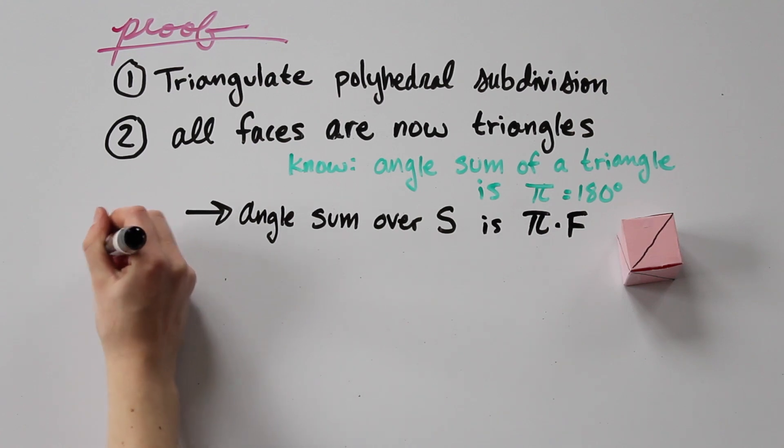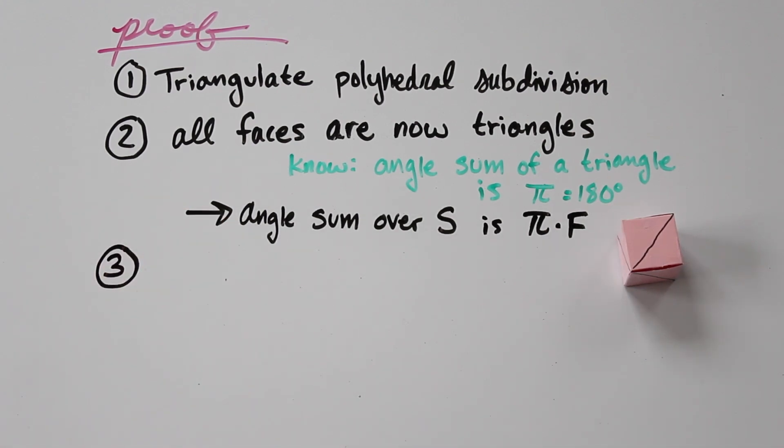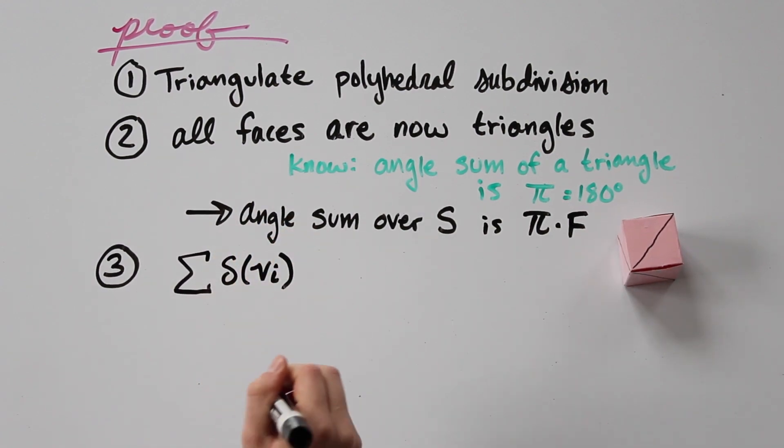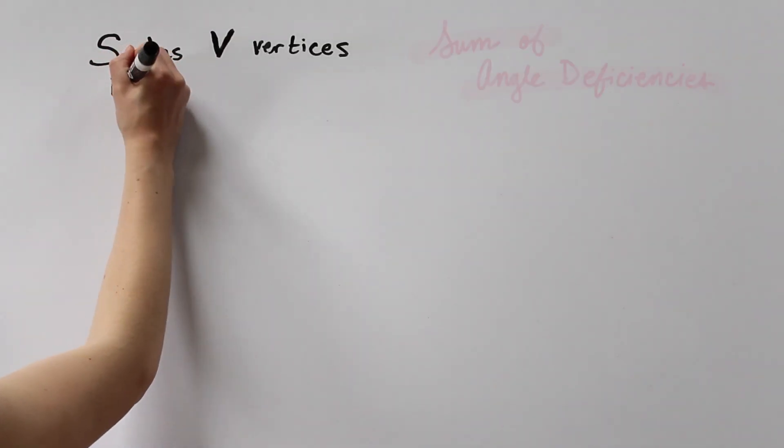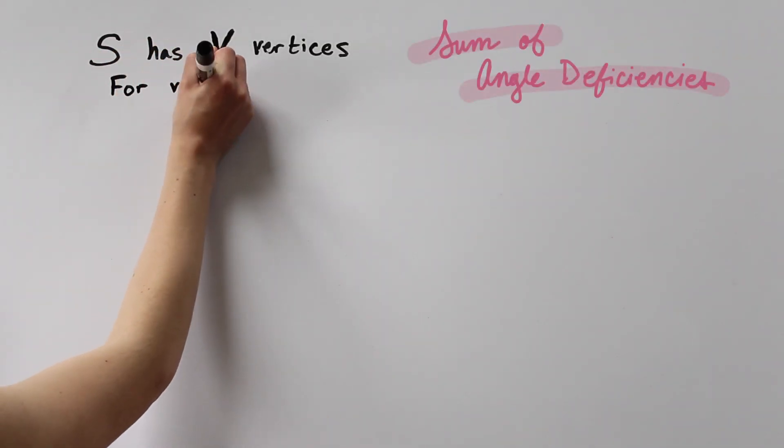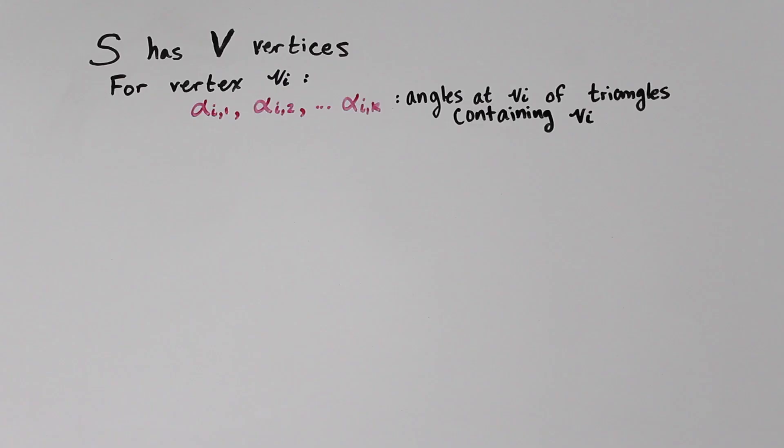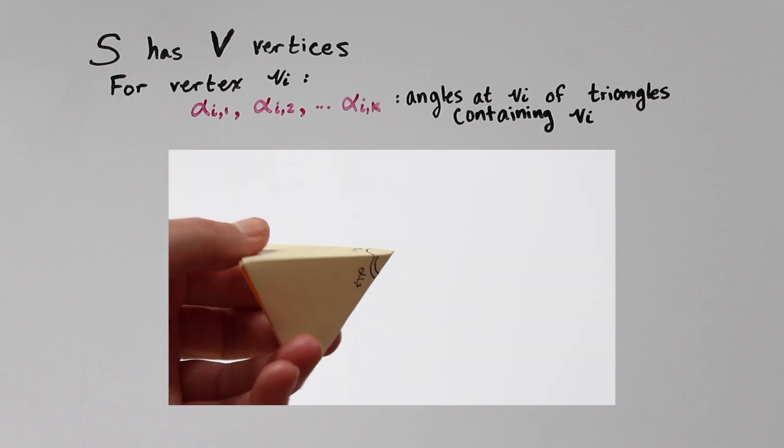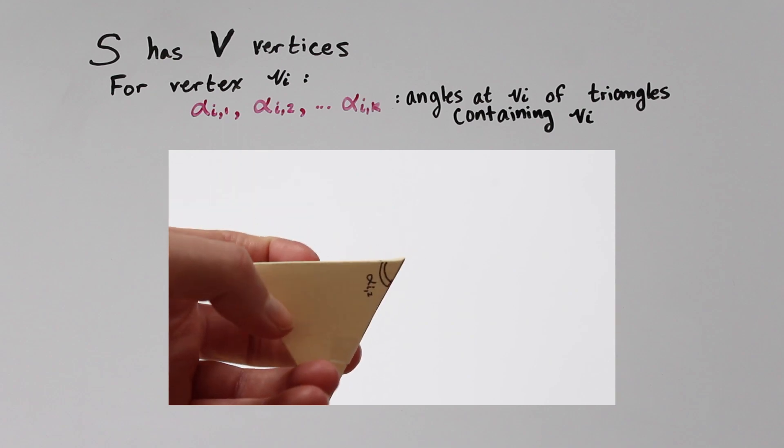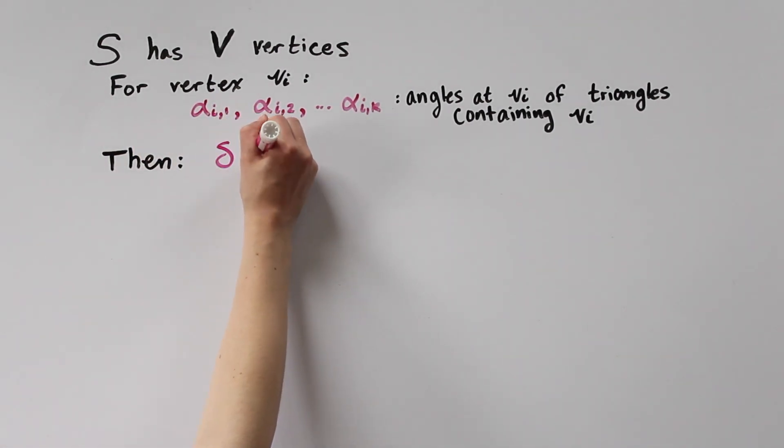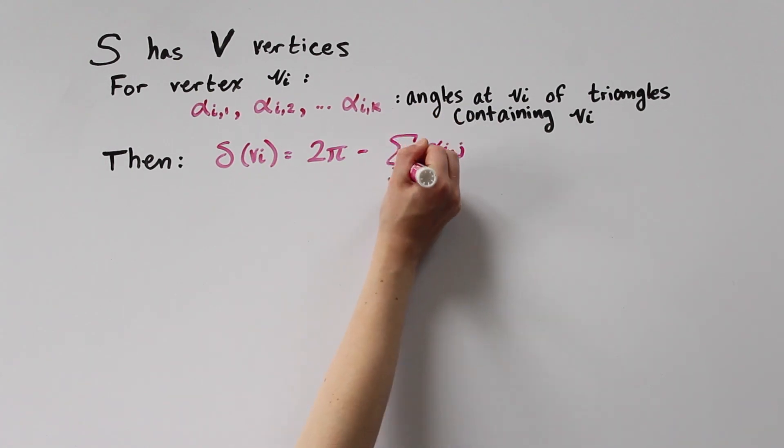In the third step, we can use this information to write an expression for the sum of the angle deficiencies. Let S have v vertices. For a single vertex vi, suppose that αi1, αi2, up to αik are the angles at vi of the faces containing vi. This is shown in the example I have below.